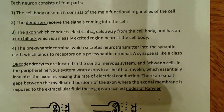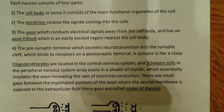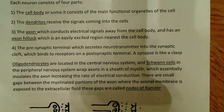There are small gaps between the myelinated portions of the axon where the axonal membrane is exposed to the extracellular fluid. These gaps are called nodes of Ranvier — named after the person who discovered them — and they represent the boundaries between the myelinated and unmyelinated portions of the axon.